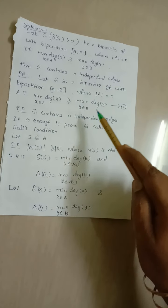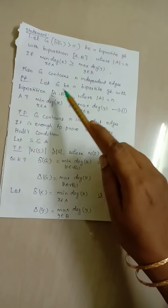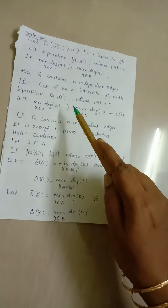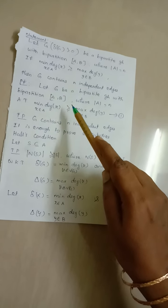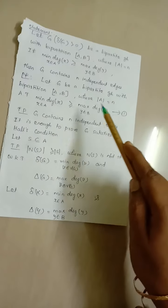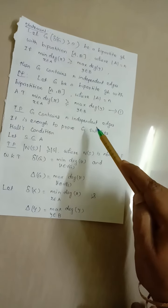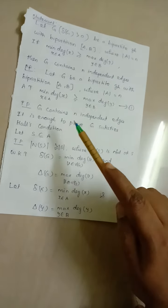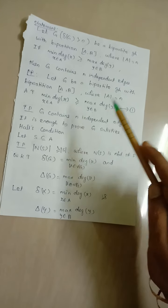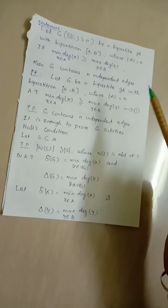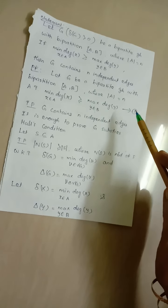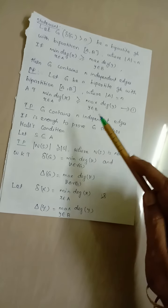We know Hall's theorem. In Hall's theorem, if G is a bipartite graph with bipartition A, B and cardinality of A is N, then G contains N independent edges if and only if the cardinality of N(S) is greater than or equal to the cardinality of S for all S contained in A.